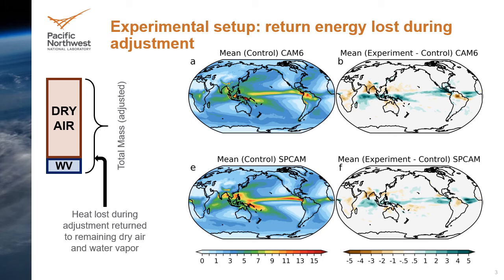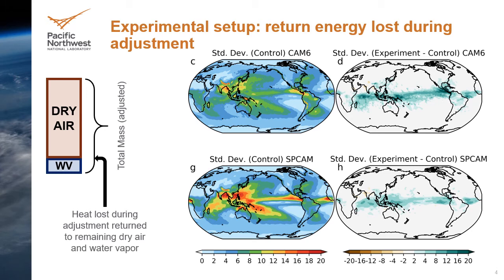Similar responses are observed in the daily rainfall variability. There are large differences between CAM-6 and SPCAM for rainfall variability in the control configurations, but their responses to the experimental setup are nearly the same. The increase in variability is roughly 50 to 100 percent of the control value, a dramatic increase that occurs mostly in regions where the mean rainfall was also increasing.